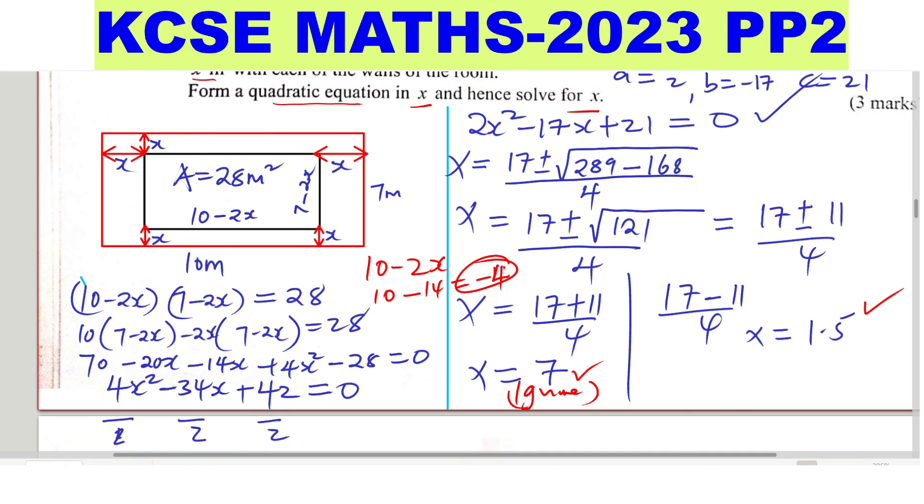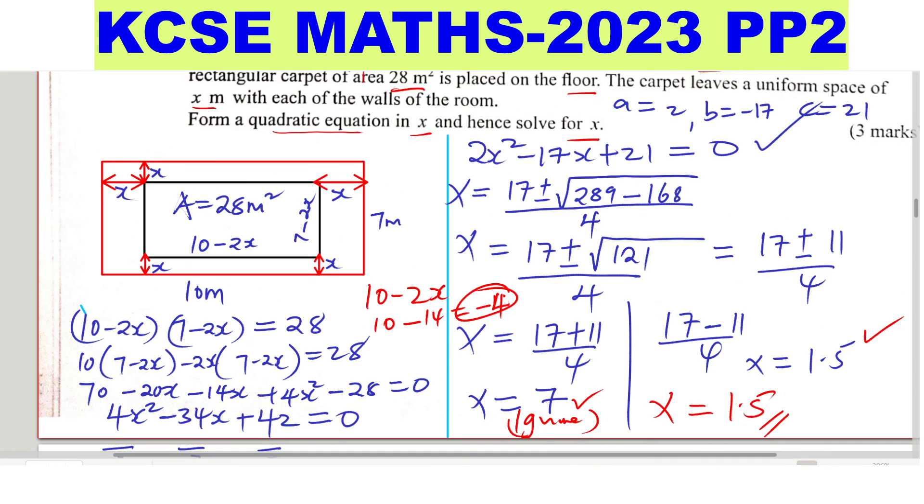So we go by 1.5. So therefore x equals 1.5. So we have answered the question. We've formed the quadratic equation and we have solved for x.